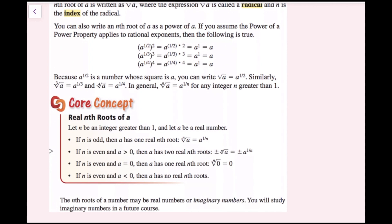Real n-th roots of a: let n be an integer greater than 1, and let a be a real number. If n is odd, then a has one real n-th root: a to the 1/n. If n is even and a is greater than 0, a has two real n-th roots: plus or minus the n-th root of a, or plus or minus a to the 1/n power. If n is even and a equals 0, then a has one real n-th root, which is 0. If n is even and a is less than 0, then a has no real n-th roots. The n-th roots of a number may be real or imaginary numbers, which you will study in Algebra 2.